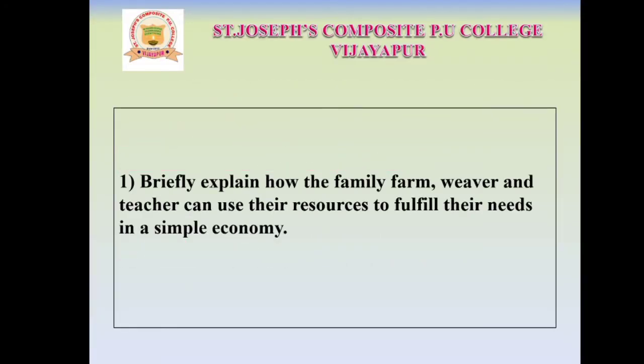First question: Briefly explain how the family farm, weaver and teacher can use their resources to fulfill their needs in a simple economy. First, you need to understand the meaning of this question. In a simple economy, how the farmer, weaver and teacher will live by using their resources. For this question, we need to answer like this.